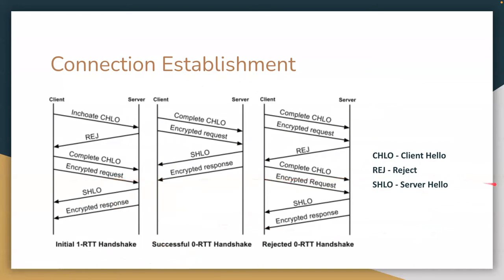Initially, the client has no information about the server. Before a handshake can be attempted, the client sends an inchoate client hello to the server to elicit a rejection response, because it contains useful information — a server config, a certificate chain, a signature, a source address token, and more. The client holds on to this and sends it back later to demonstrate ownership of its IP. Once the client has received the server config, it authenticates it by verifying the certificate chain and signature, then sends a complete CHLO containing the client's ephemeral Diffie-Hellman public value.